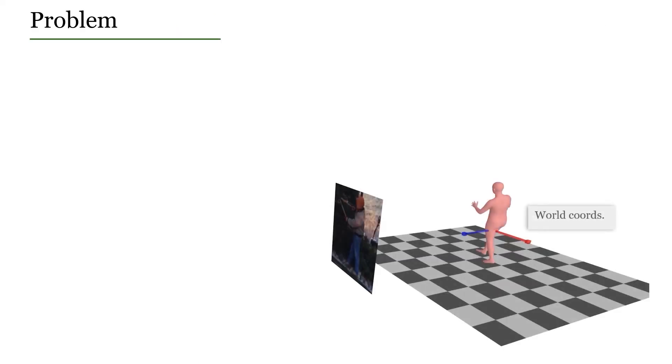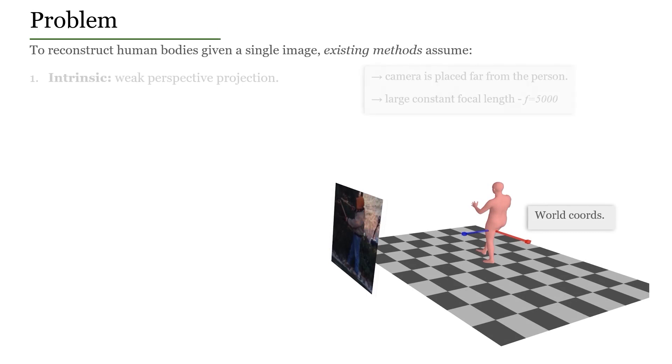To reconstruct human bodies given a single image, existing methods use weak perspective projection, which assumes that the camera is placed far away from the person.